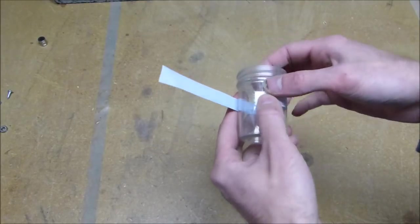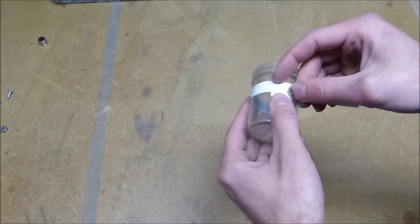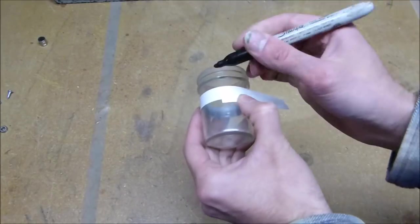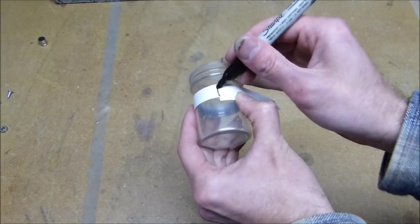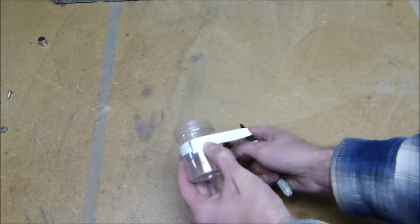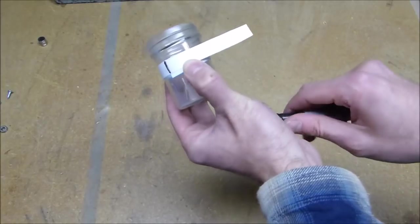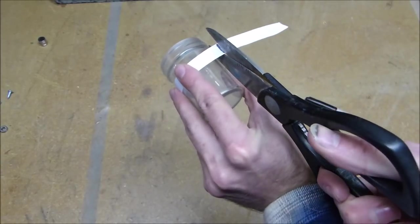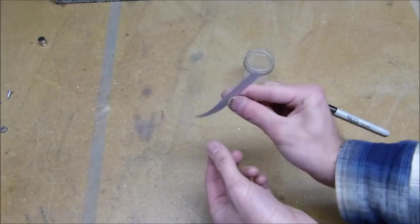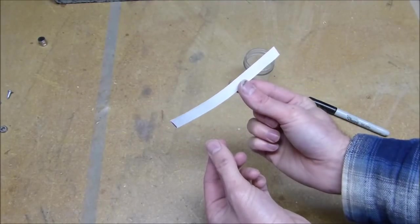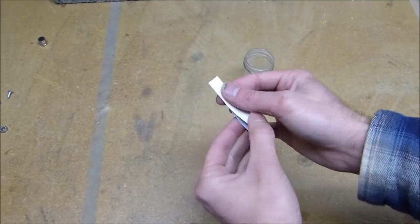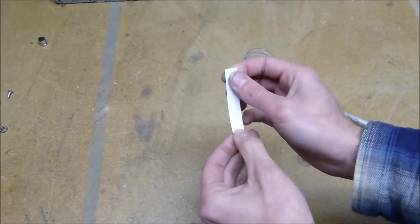A strip of paper and wrap it around. Cut it off right where it wraps all the way around, so it's one full loop around the jar. Divide this into 12 equal parts with folds. So first fold it in half.